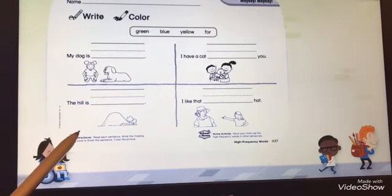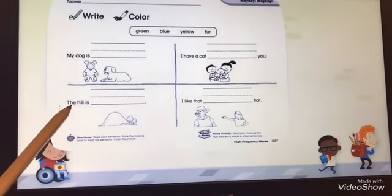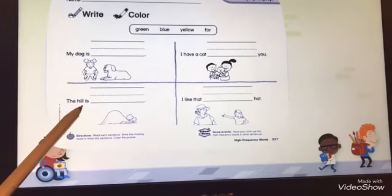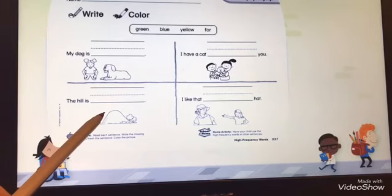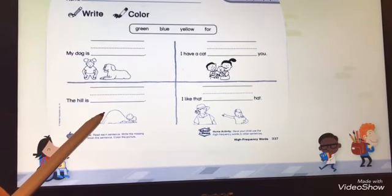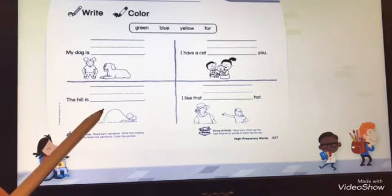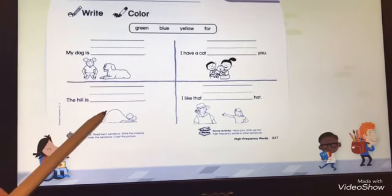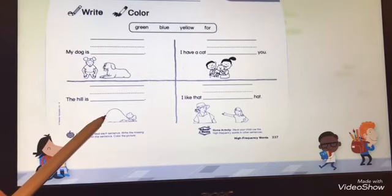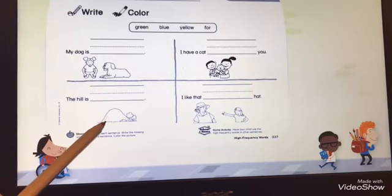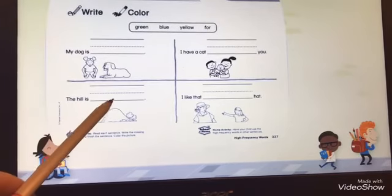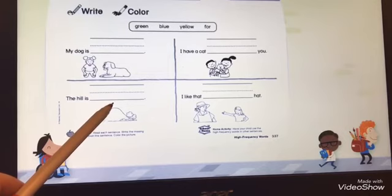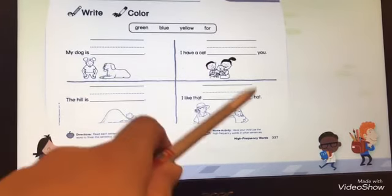Okay, now here down. Let's read the sentence: 'The hill is...' is what? What the color of the hill? There is grass and trees. What the color of the grass and trees? Green, right? So the hill is what? Write your answer here.